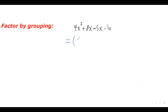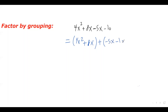I group the first two terms: 4x squared plus 8x. We have to separate these two groups with an addition sign between them. The second group is negative 5x minus 10. So that gives me my first group and my second group.